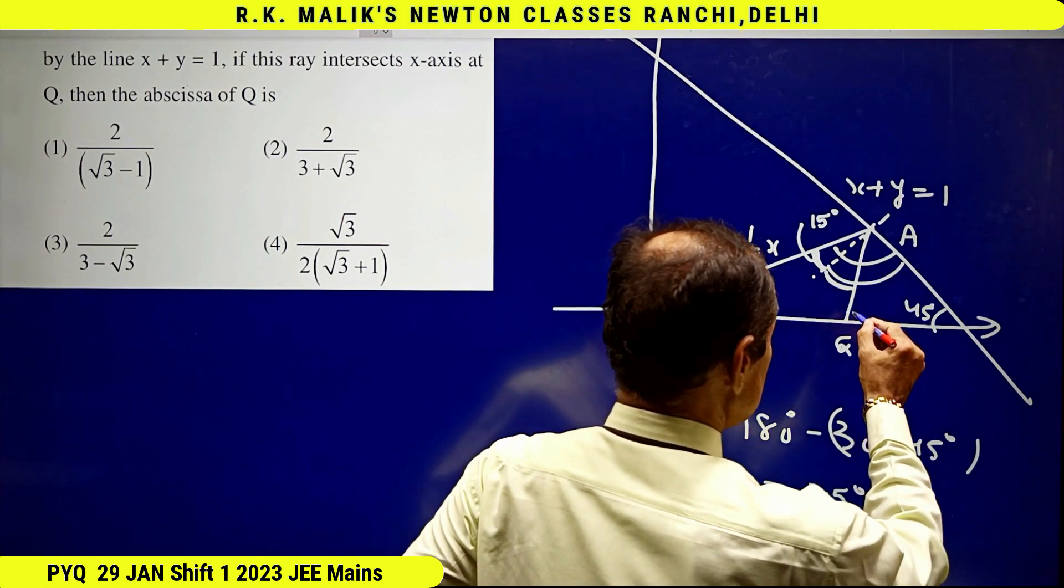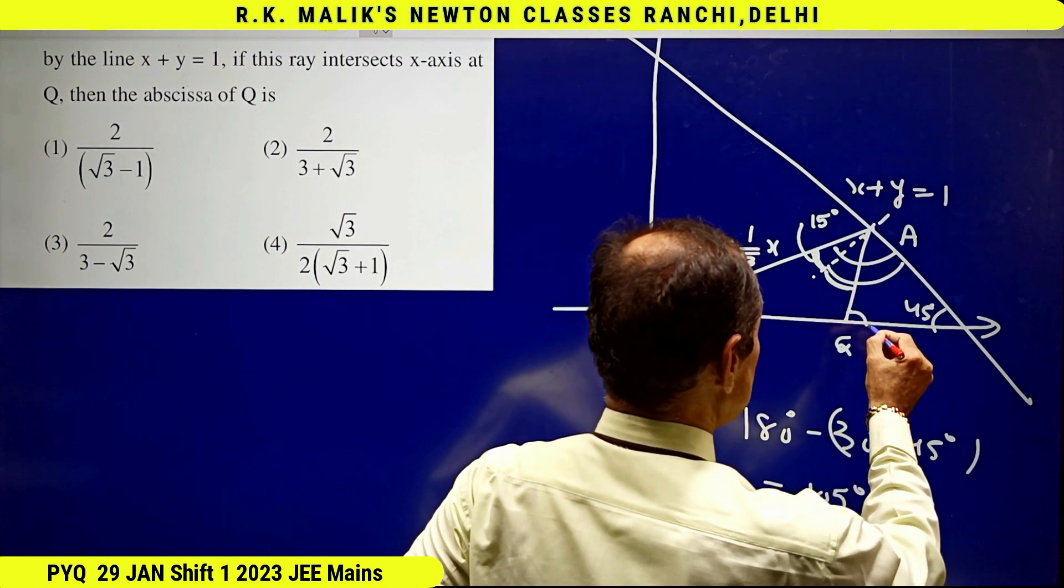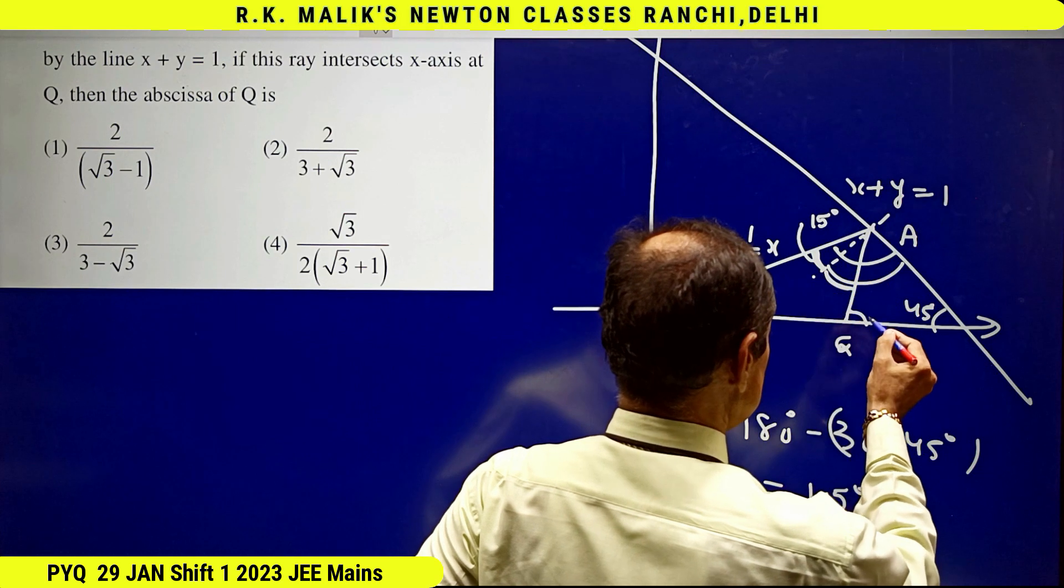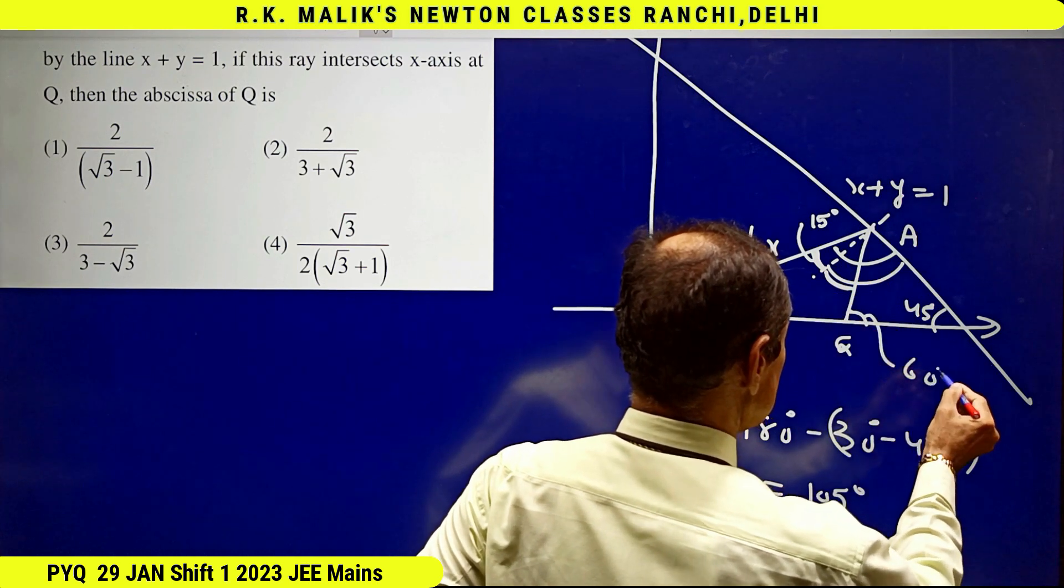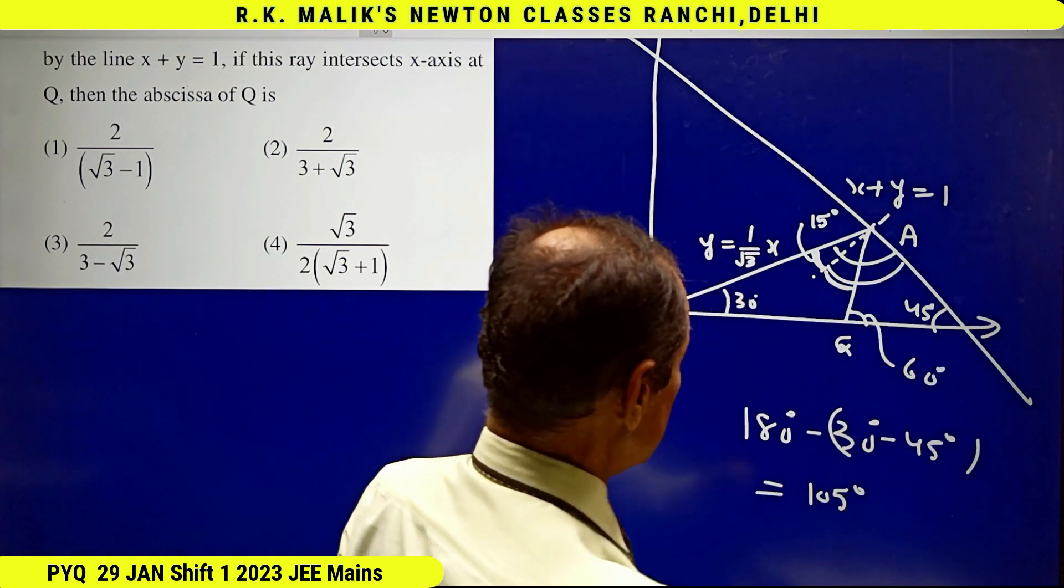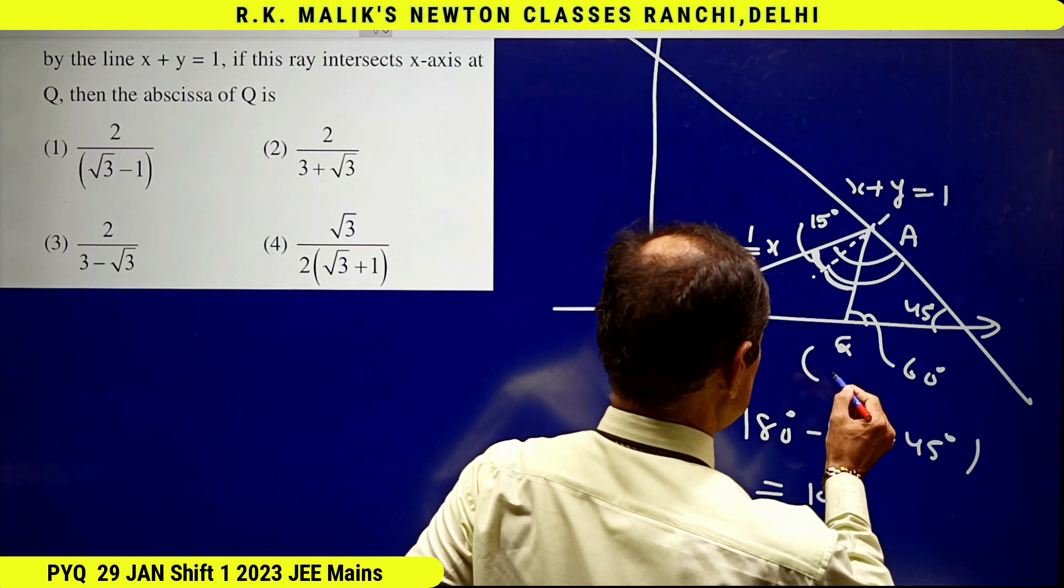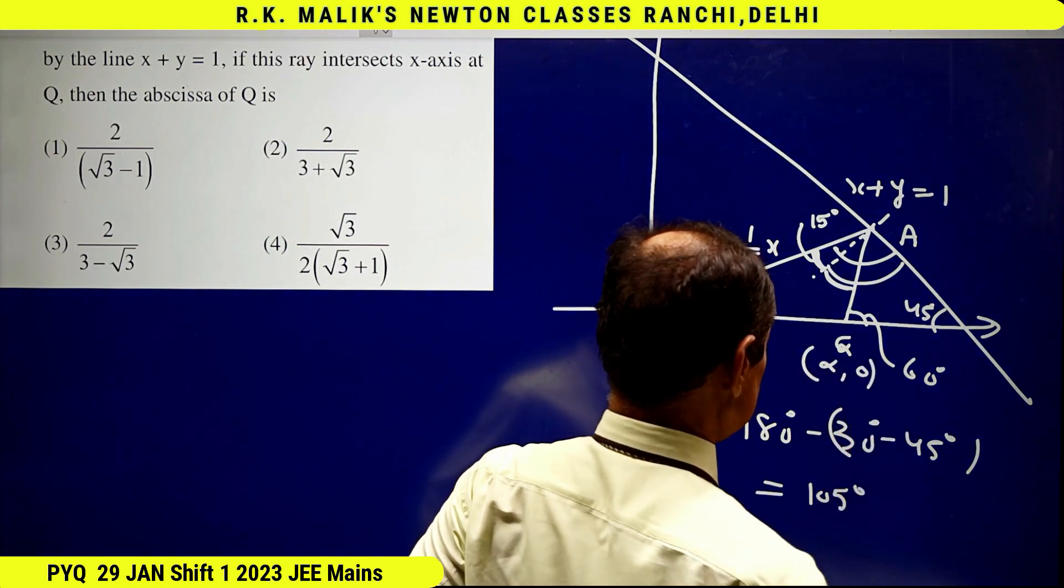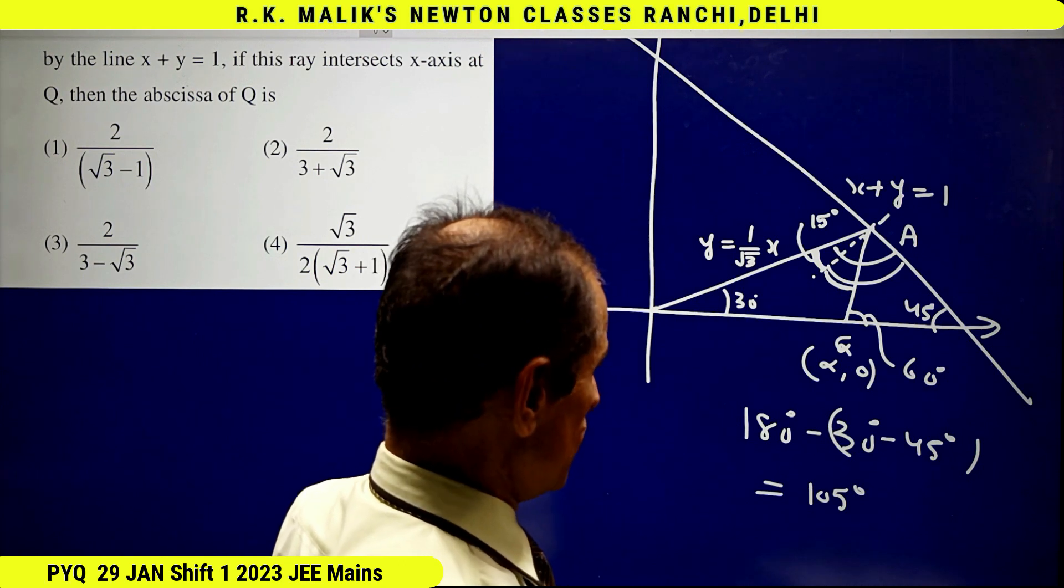Therefore, this angle will be 30 + 30 = 60 degrees. Let this point have x-coordinate α, y-coordinate 0. We have to find the value of α.